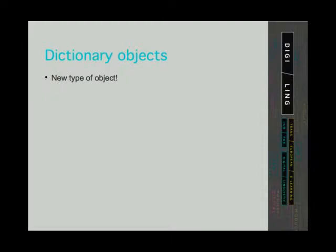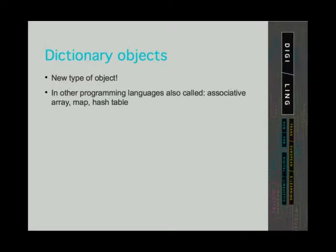So what are dictionaries? Dictionaries are a new type of object. In other programming languages they are also called associative arrays, maps or hash tables.